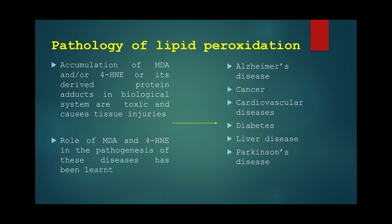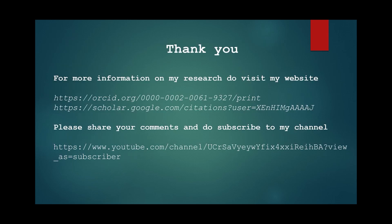Lipid peroxides are an important class of biomolecules generated by oxidative stress in cells. Though lipid peroxides have been observed in multiple disease states, it is often unclear to what extent they initiate disease or are downstream products of other disease-promoting factors. Thus, further research needs to be done to study the role of lipid peroxides in disease pathogenesis.